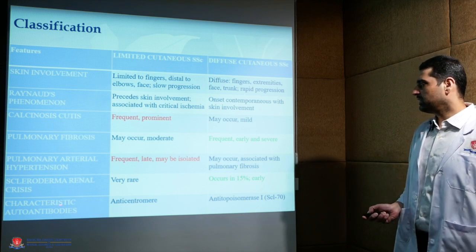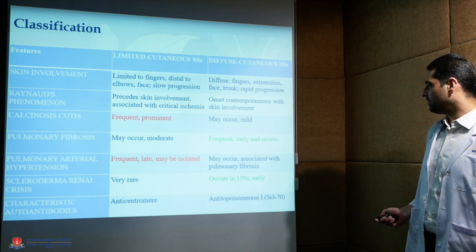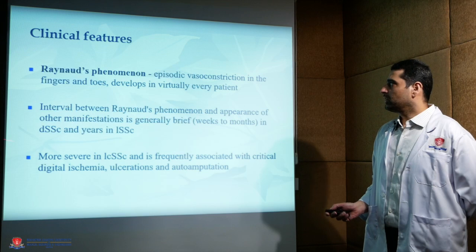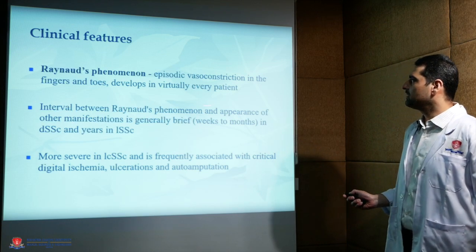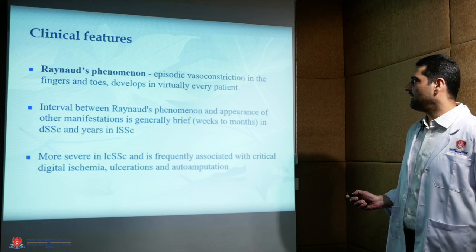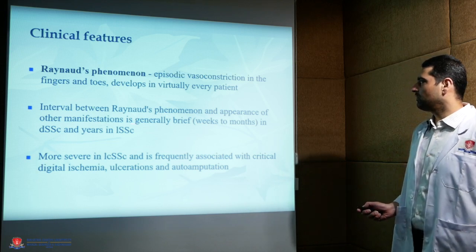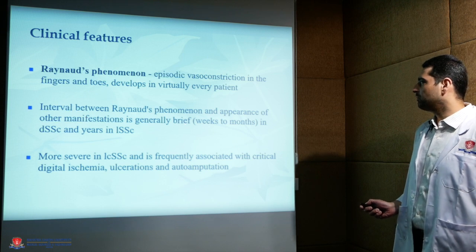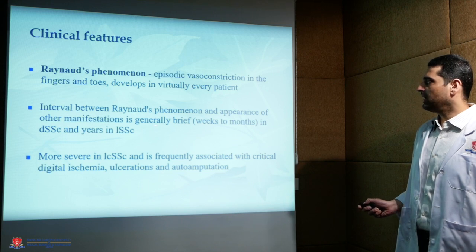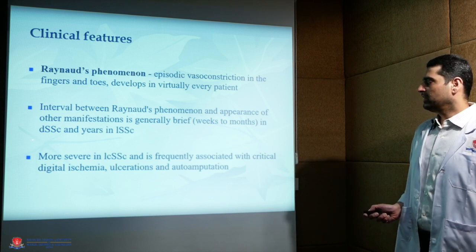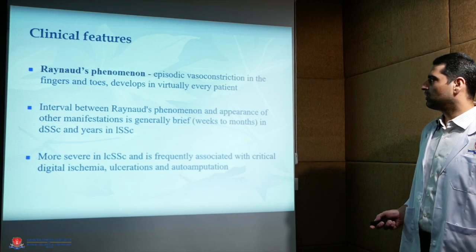The characteristic autoantibody in the limited variant is anti-centromere, and anti-topoisomerase in the diffuse cutaneous variant. Raynaud's phenomenon, which is episodic vasoconstriction in the fingers and toes, develops in virtually every patient. The interval between Raynaud's phenomenon and other manifestations is brief in diffuse variant and spans years in the limited variant. It is more severe in the localized variant and associated with ischemia, ulcerations, and auto-amputation.